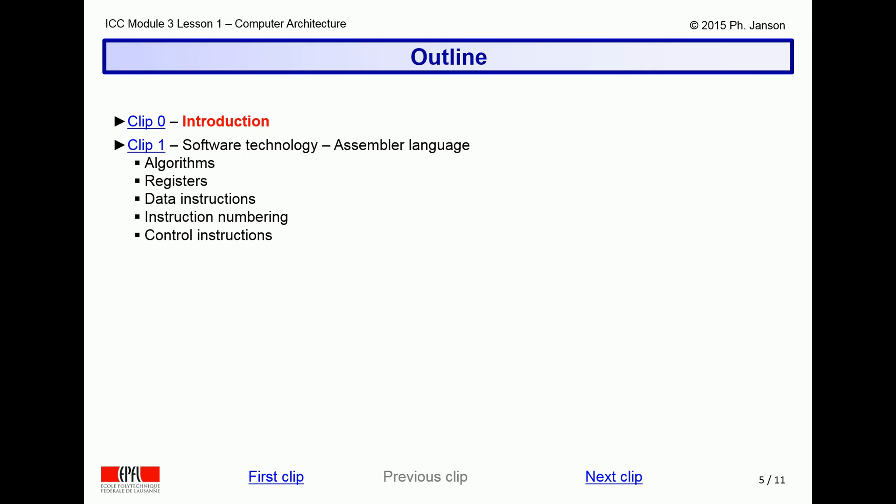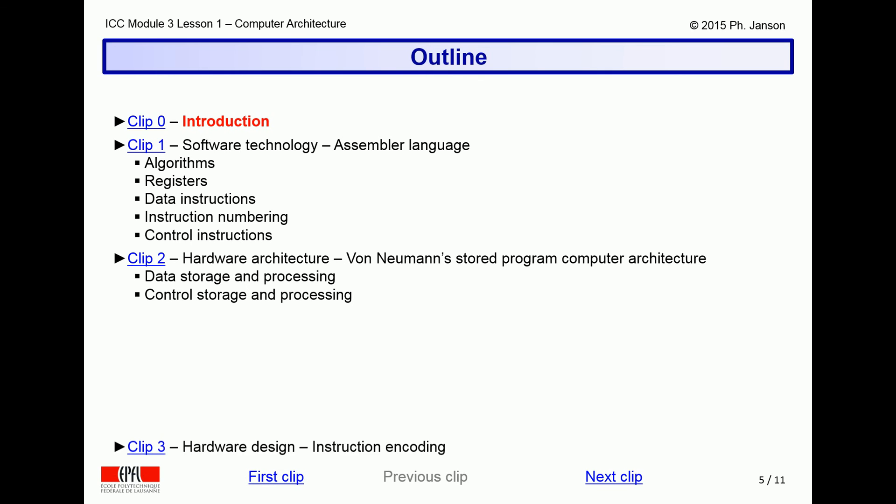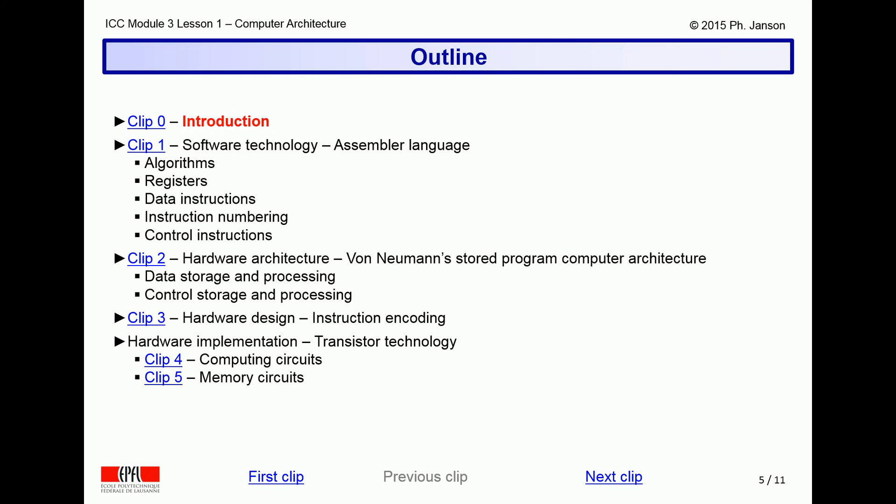The first one will explain how computers can be programmed in a language called Assembler to implement algorithms. The second one will describe the building blocks that make up a computer of the classical von Neumann architecture. The third one will then show how assembler language programs can be encoded to run on such a von Neumann computer. The fourth and fifth clips show how transistors can be used to implement computing and memory circuits. The last two finally discuss how the performance of computers can be increased using various forms of parallelism.